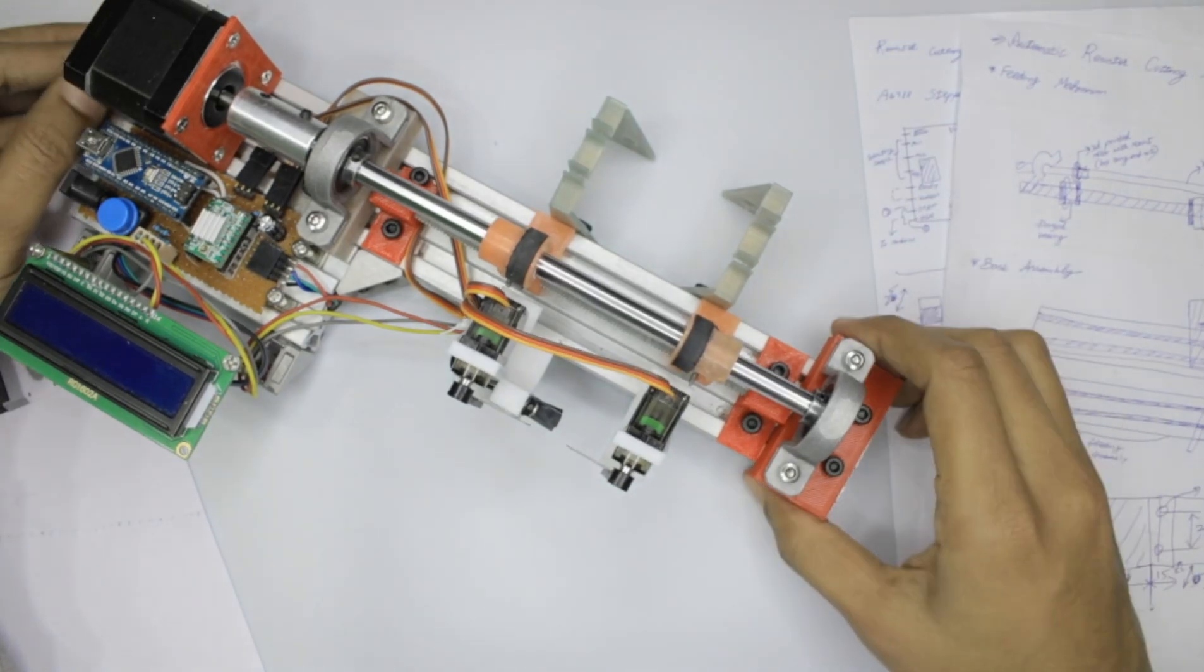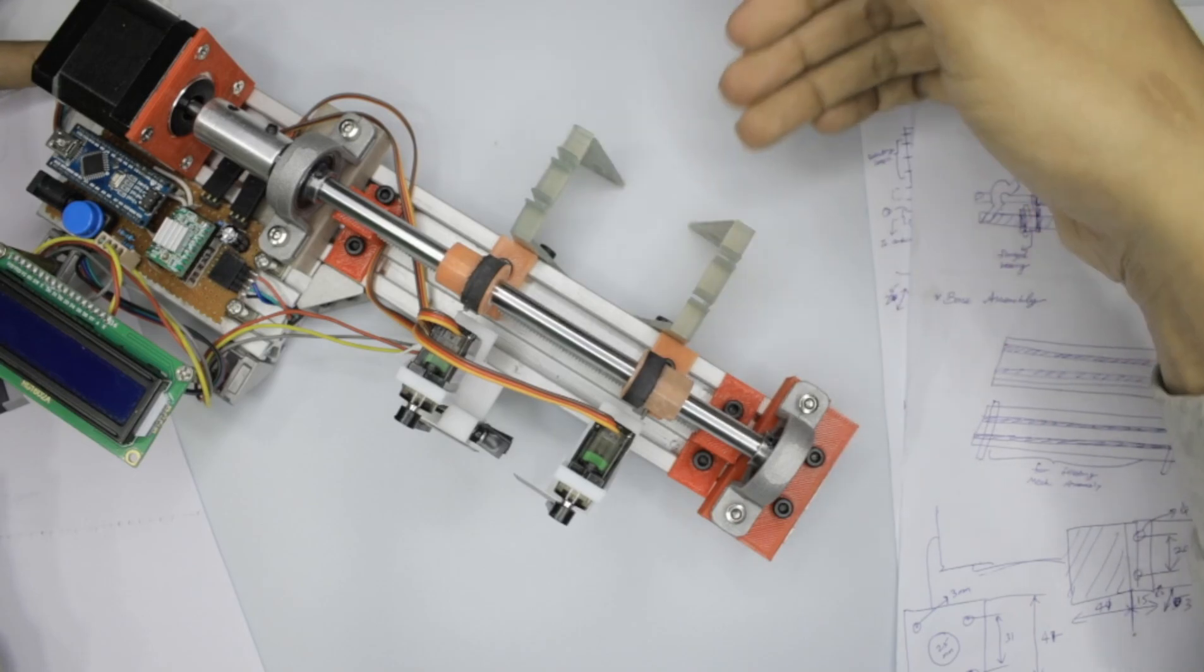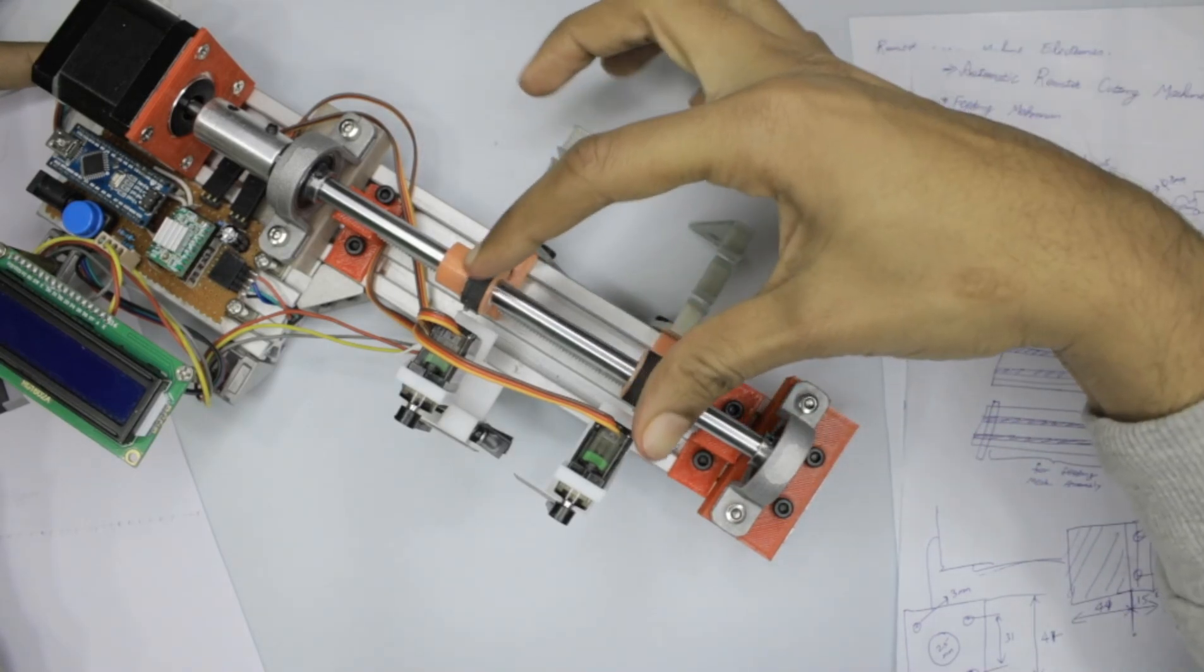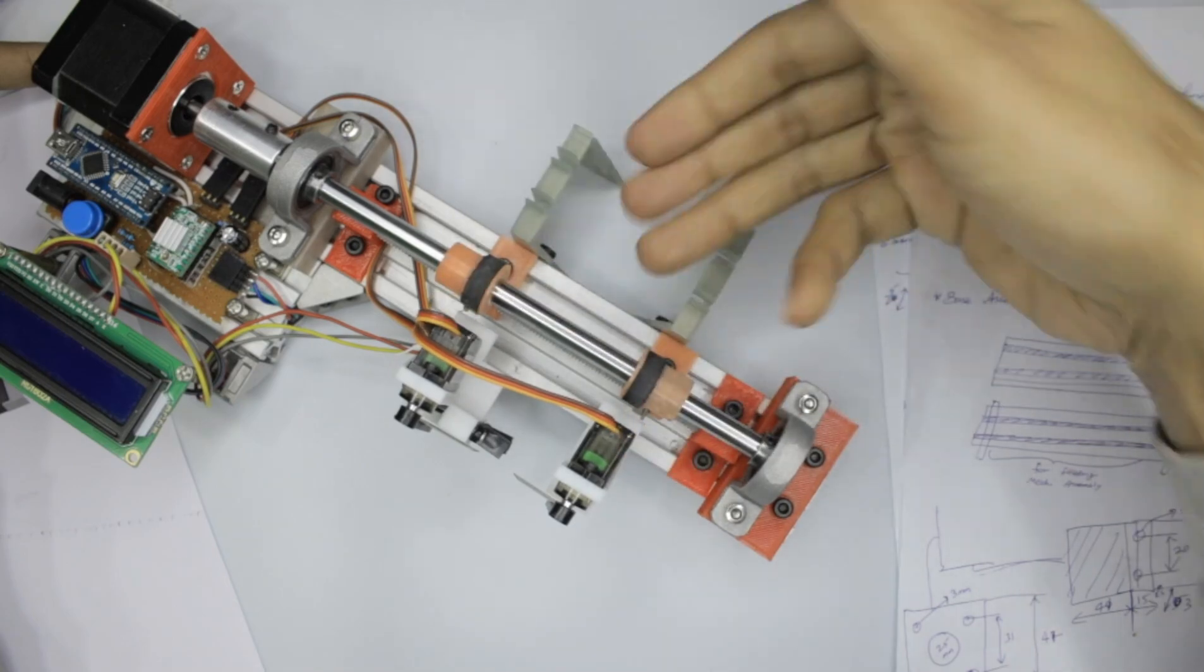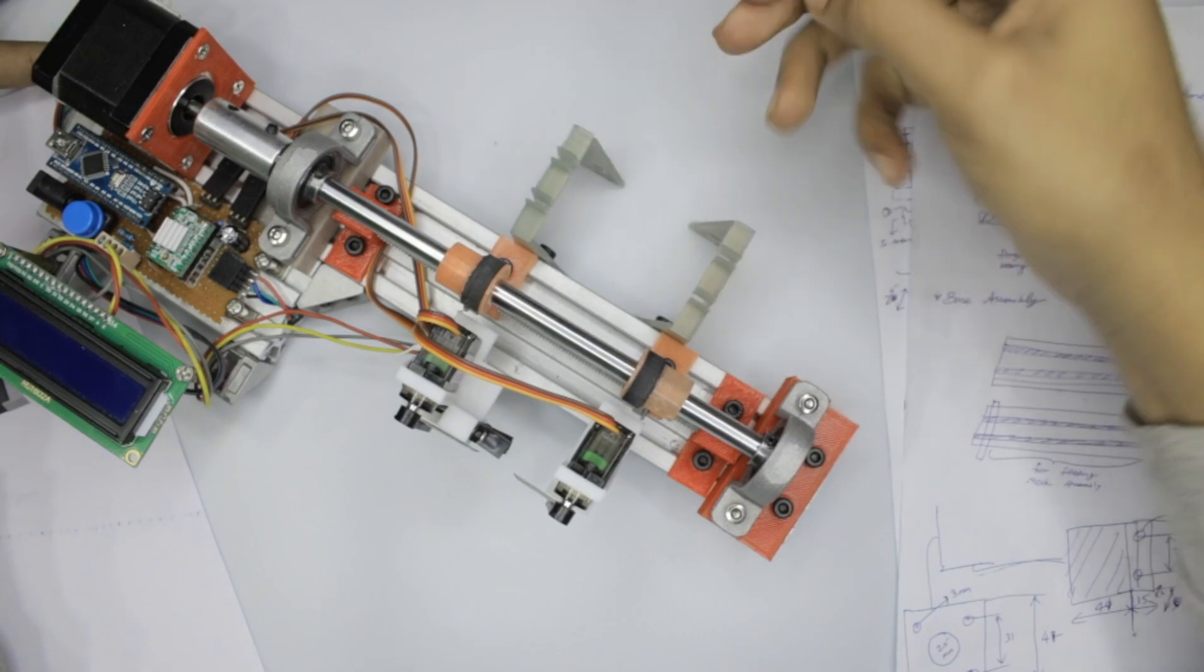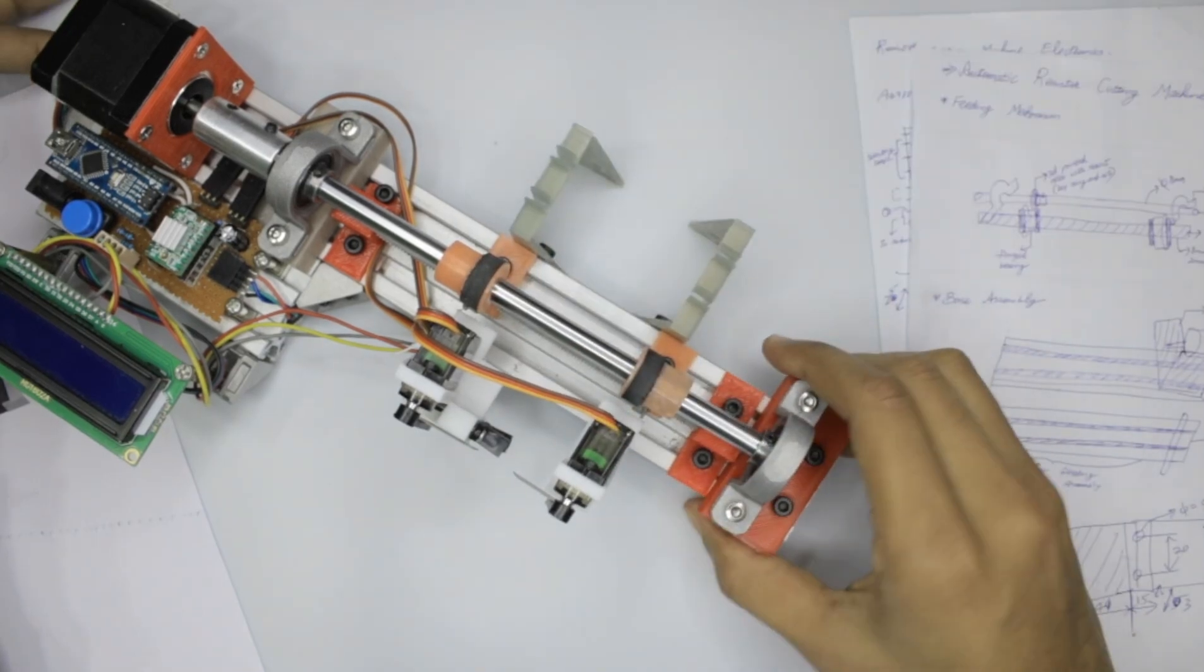These two things you see here are the guiders which guide the strip to enter exactly in parallel to this feeding mechanism. It shouldn't slip away or turn in either direction. These guiders will guide it directly into the feeding area.